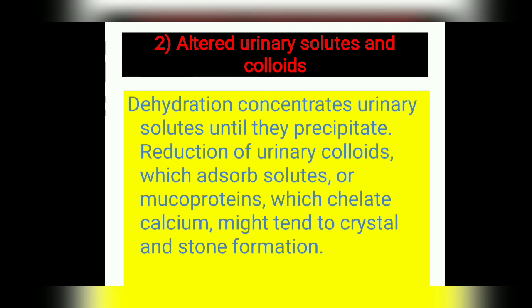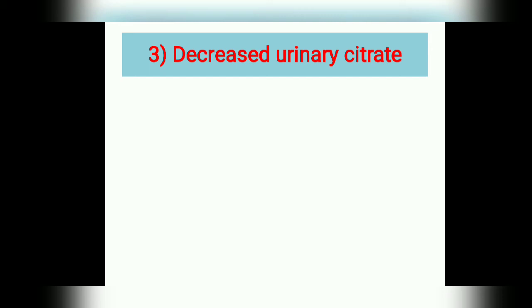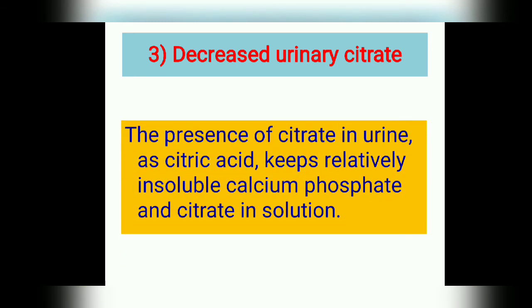Reduction of urinary colloids — mucoproteins which adsorb solutes — delays calcium crystallization and stone formation. If urinary colloids decrease, solutes cannot be adsorbed and stone formation occurs. Decreased urinary citrate is another cause. Citric acid keeps relatively insoluble calcium phosphate and citrate in solution; if urinary citrate is reduced, these substances remain in insoluble form, precipitate, and form stones.